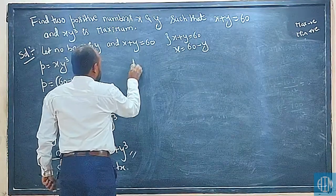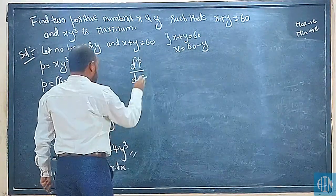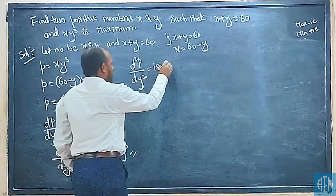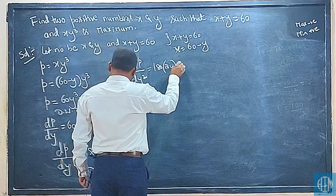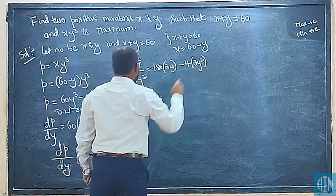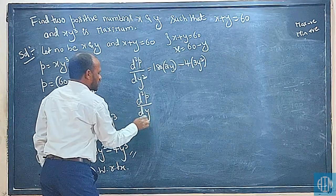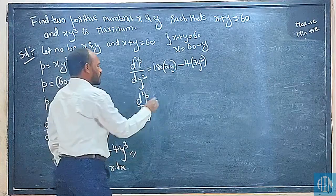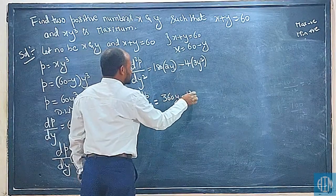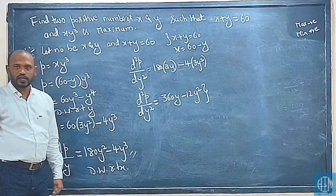Now d²P/dy². Constant outside. y² becomes 2y. y³ becomes 3y². So d²P/dy² is equal to 360y minus 12y².